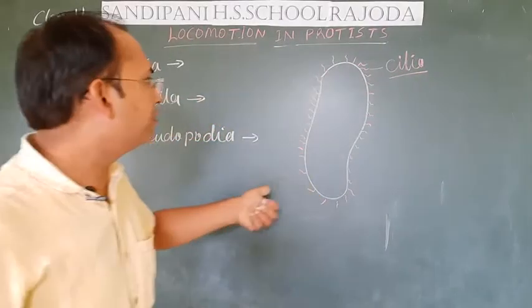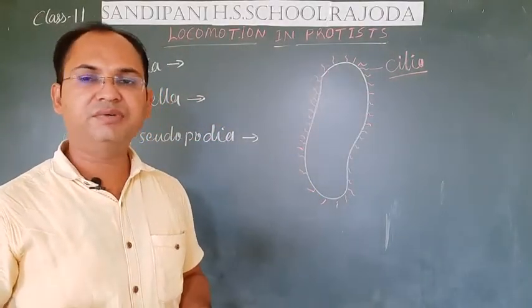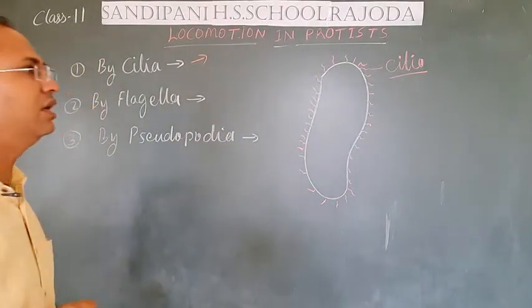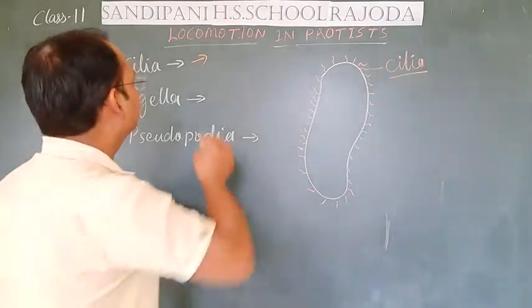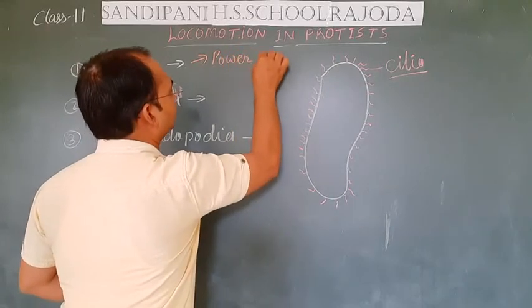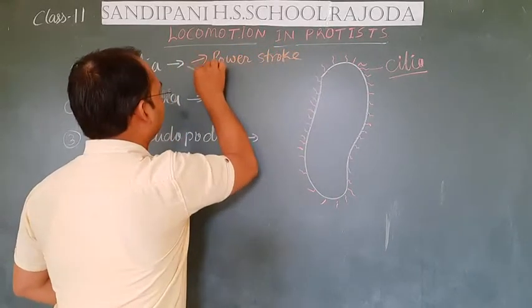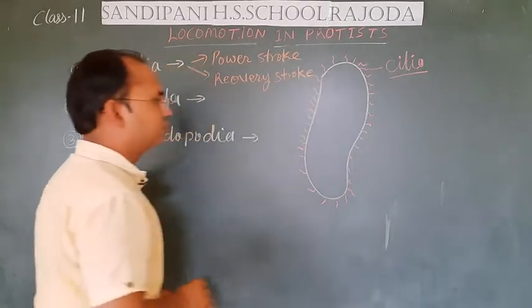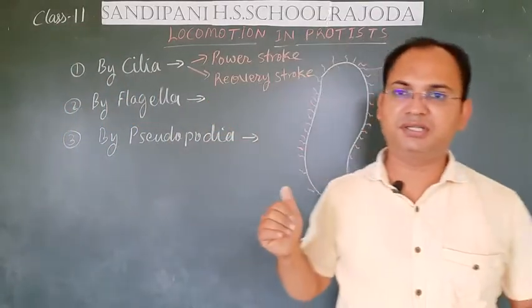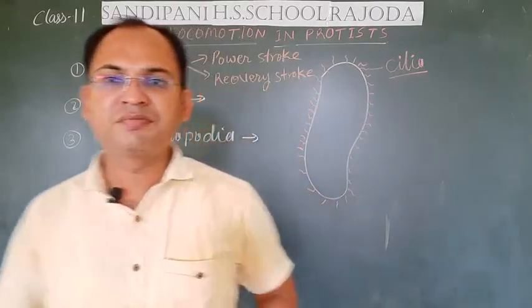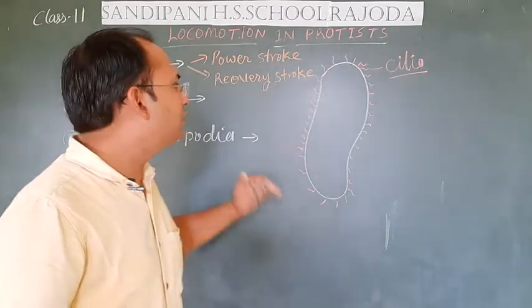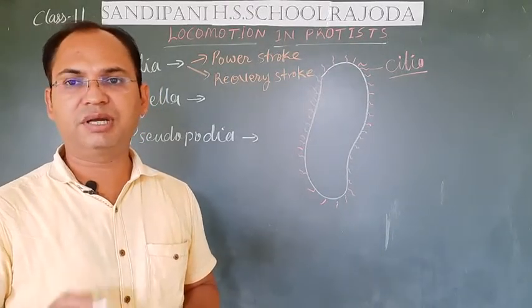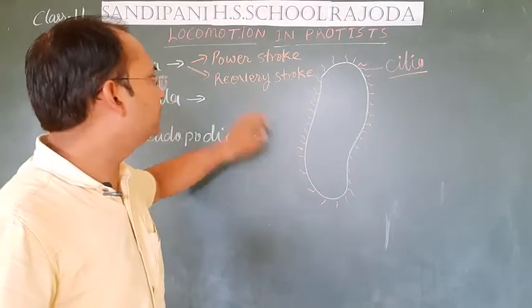The cilia are responsible for the slow motion of the protistan cell. Cilia perform two types of movement by which the protistan cell moves. The first movement shown by cilia is the power stroke and the second is the recovery stroke. In the power stroke, the cilia move very fast, causing the body of the protistan to move. In the recovery stroke, the cilia slowly change their position before making the next sudden stroke.